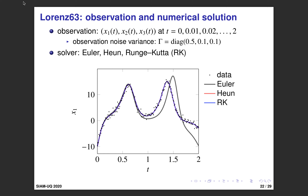The black dots show the observation data. The black line is the solution of the Euler method, and the red and blue curves — which almost overlap — are solutions by the Heun method and Runge-Kutta method. Runge-Kutta has the best accuracy among these three methods, and Euler has the worst. The discretization error by Euler method is large around time t equals 1.